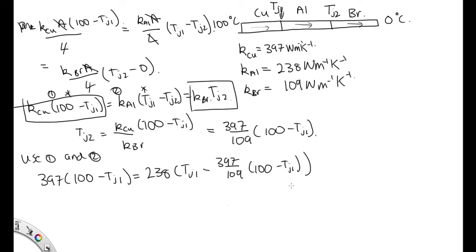So we can collect together all the TJ1s over this side and all the pure numbers over this side. So we've got 397 times 100 plus 238 times 397 times 100 over 109. So that works out to 126,384.